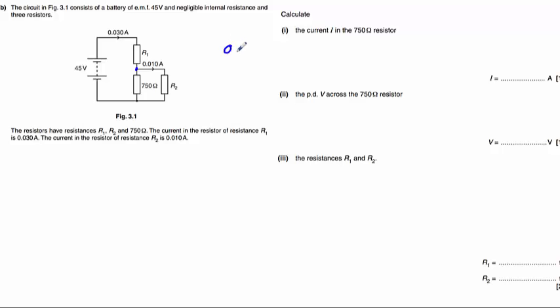We know that there is 0.030 amps going into that point, and we know there is 0.010 amps coming out, plus our mystery current going through the 750 ohm resistor, which we call I. So we can rearrange that to get I equals 0.030 take away 0.010. So therefore, I equals 0.020 amps.